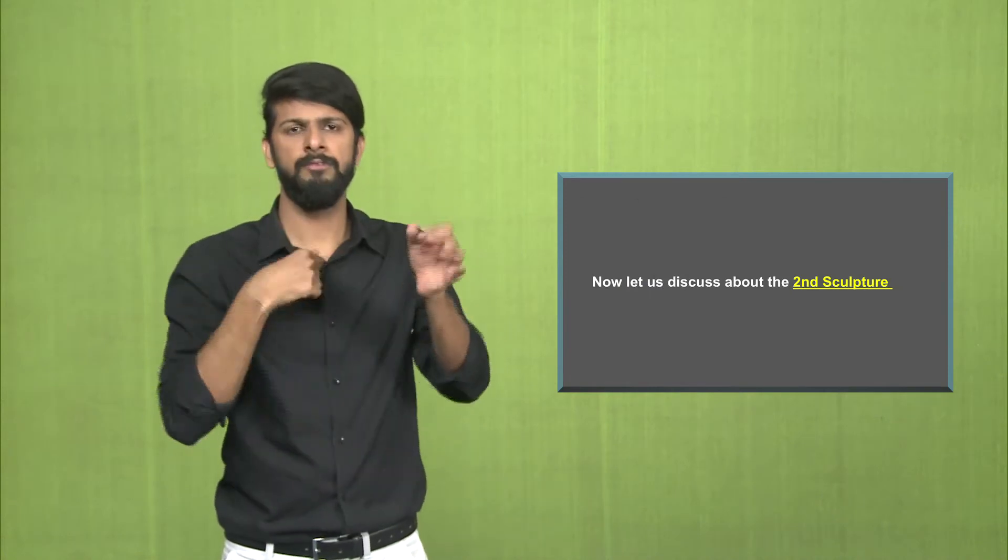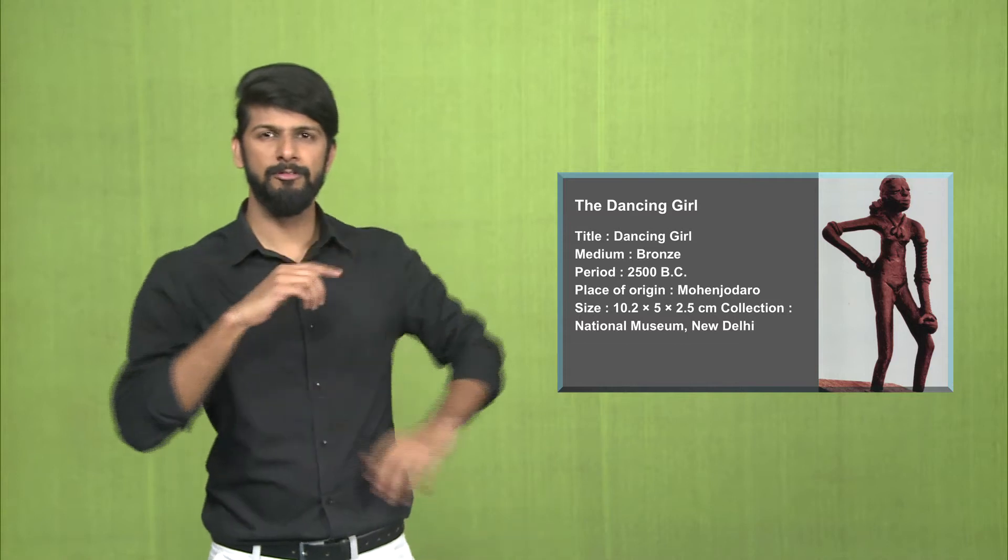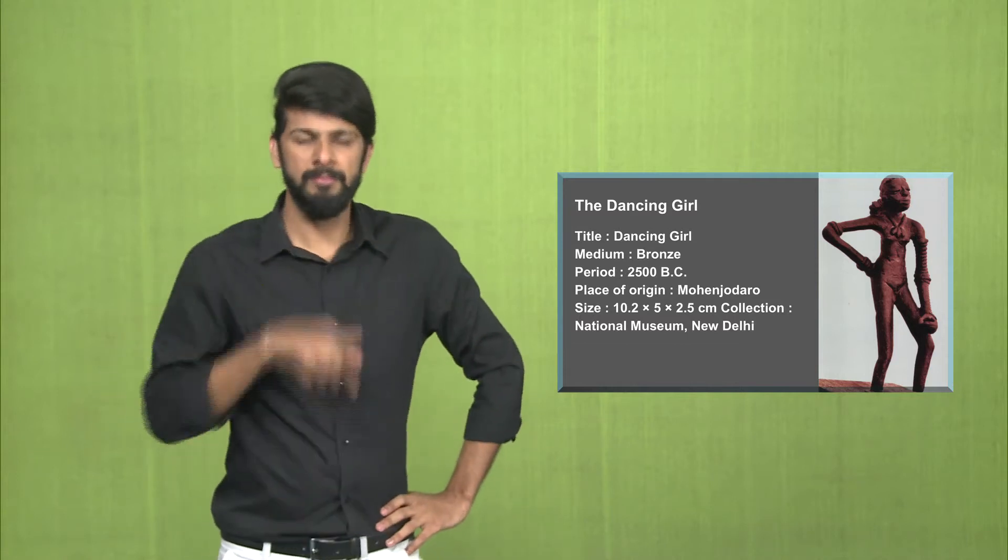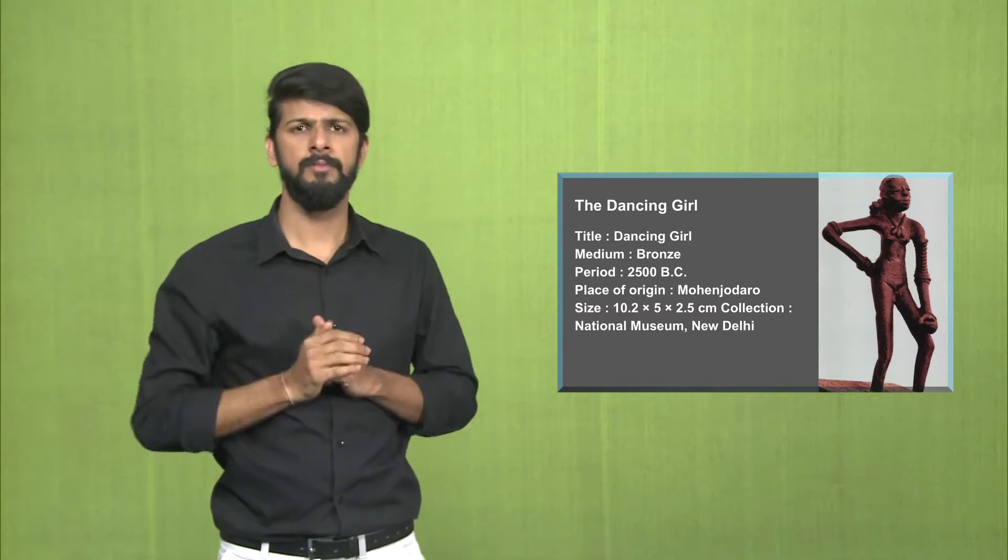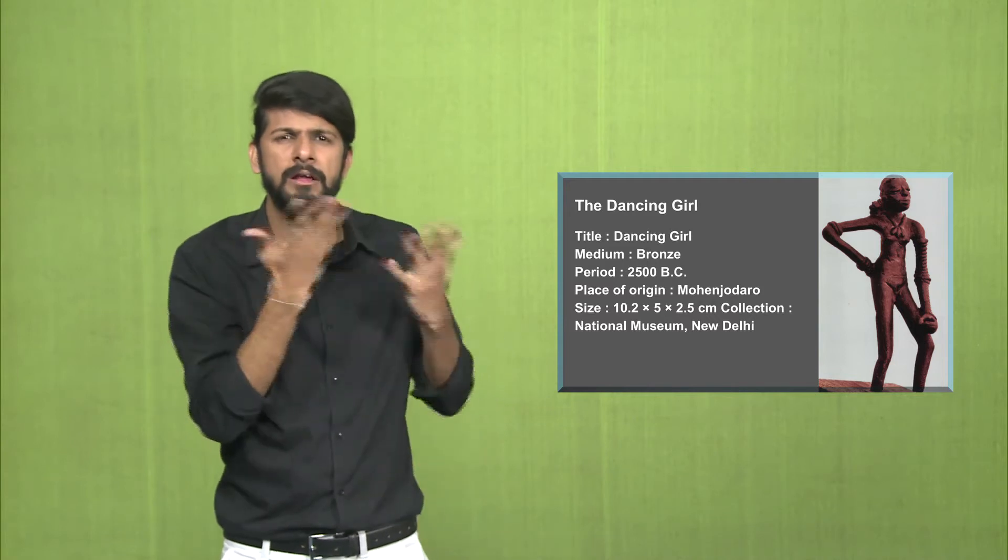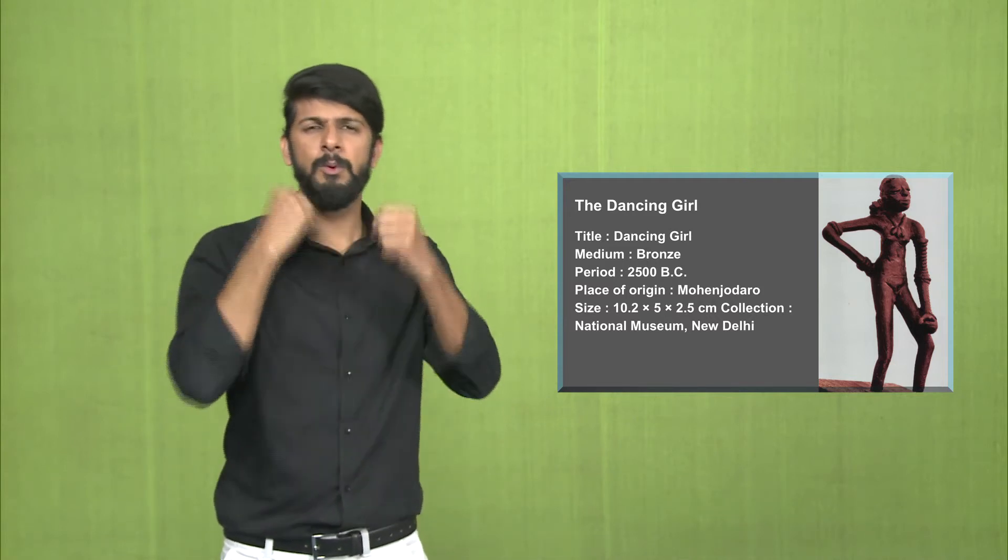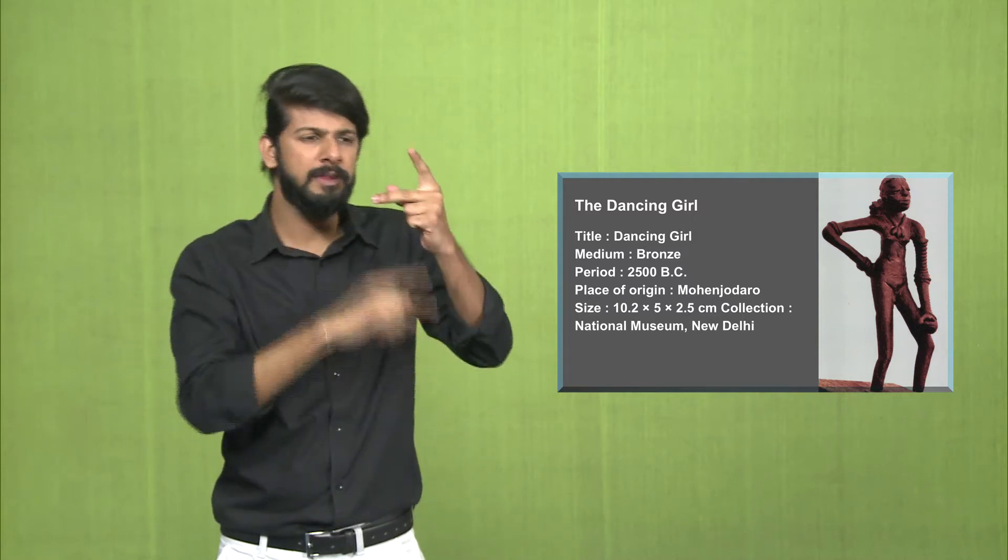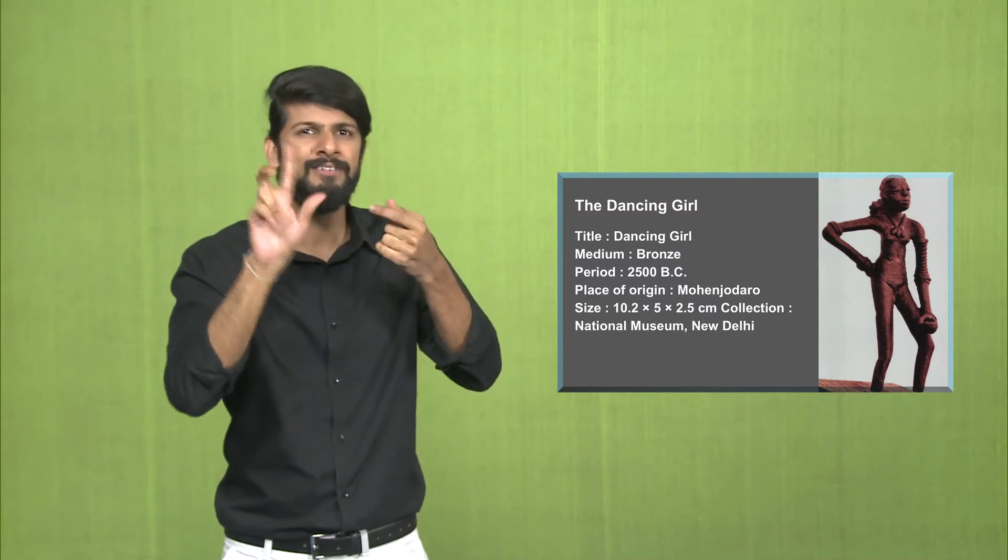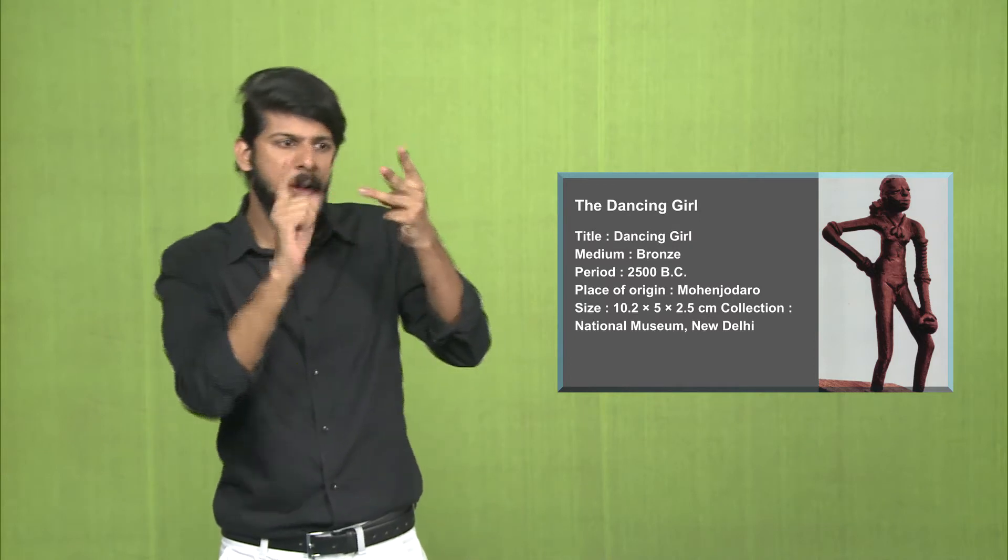Now the second sculpture. The title is The Dancing Girl. The medium is bronze. To give you an example of what bronze is, medals given in competitions - first is gold, second is silver, third is bronze. That is the material used for this sculpture.